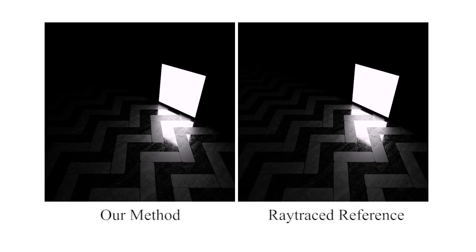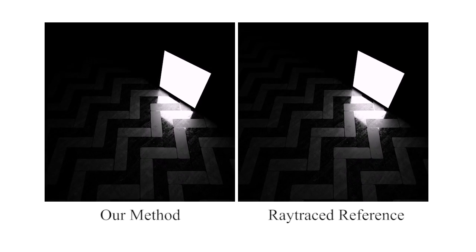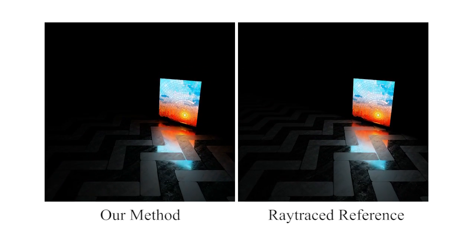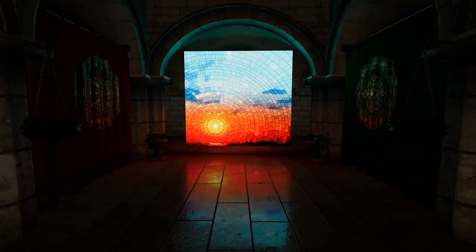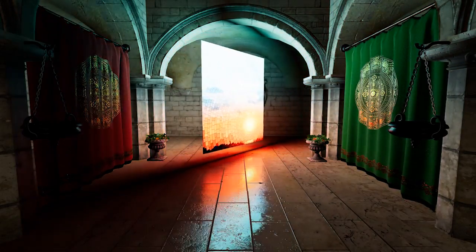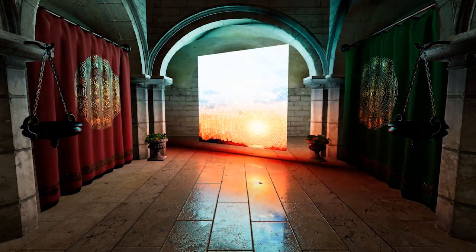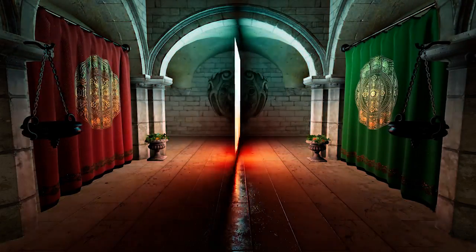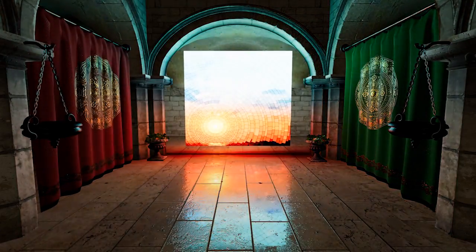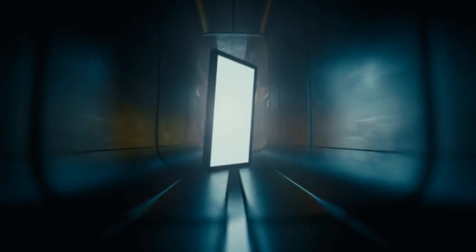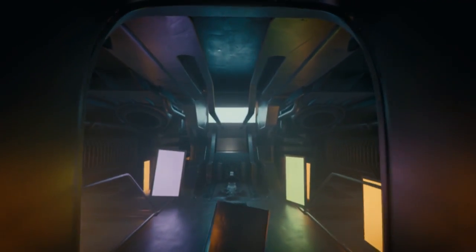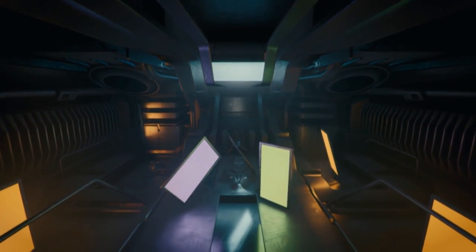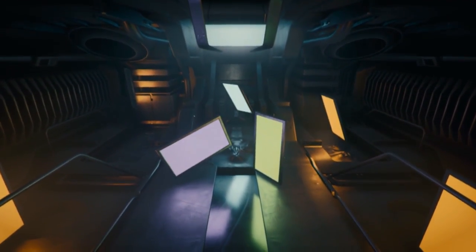Finally, we provide an extension of our technique to account for texture-mapped polygonal lights. Our technique runs in real-time on a modern GPU. It is robust, fast, accurate, and simple to implement. This last animation showcases our technique running at 65 frames per second in an industrial game engine on a high-end GPU.